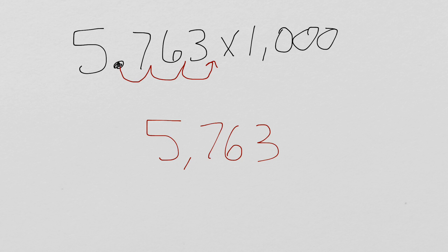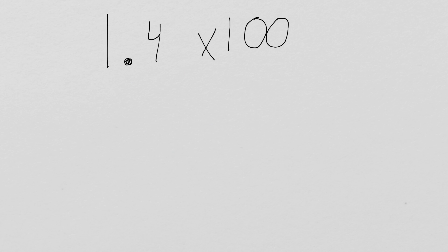Now, some people might be thinking, but what if we don't have enough numbers in our original factor to move places with? Well, let's take a look at this next example. Alright, in this example, we have 1 and 4 tenths times 100. Well, we know from before, when we multiply by 100, we have to move the decimal two spaces to the right.